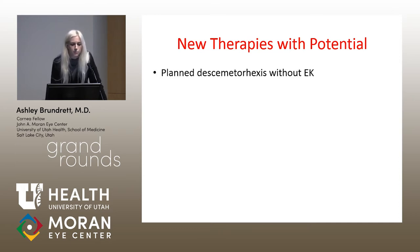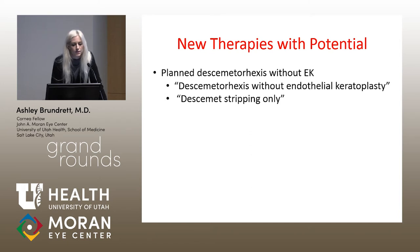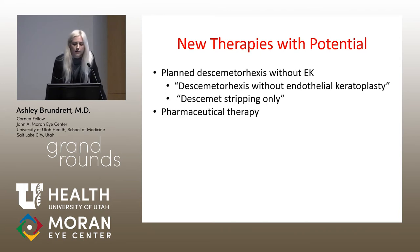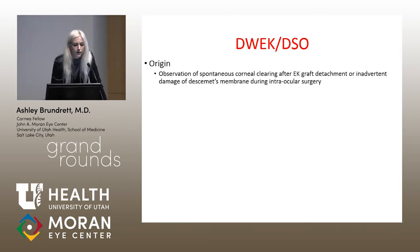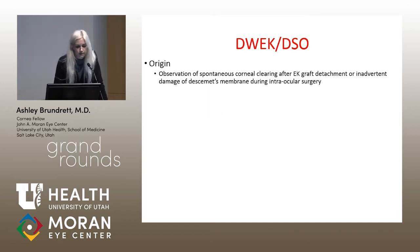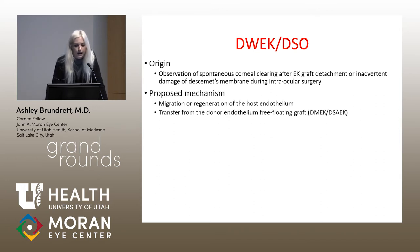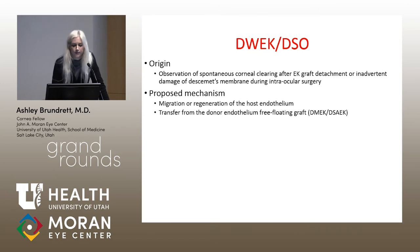There are some new therapies being studied with potential. One is a planned descemetorhexis without doing a transplant — DWEK and DSO are the acronyms being used, meaning descemetorhexis without endothelial keratoplasty or Descemet's stripping only. The basic origin comes from observed cases of patients with spontaneous corneal clearing after either graft detachment after EK, or inadvertent damage to Descemet's membrane during intraocular surgery. The proposed mechanism was migration or regeneration of the host endothelium, and with EK, possible transfer from the donor graft of cells that repopulate.